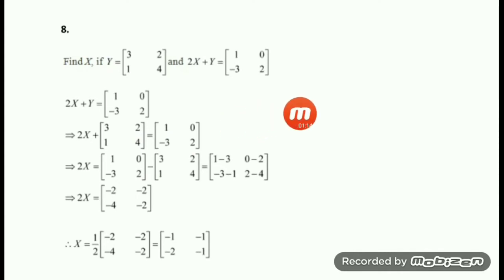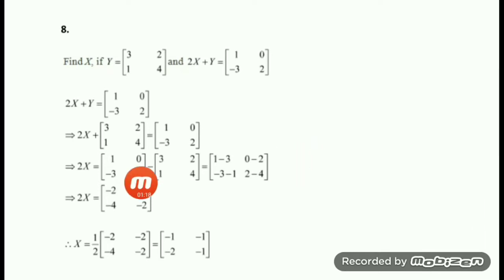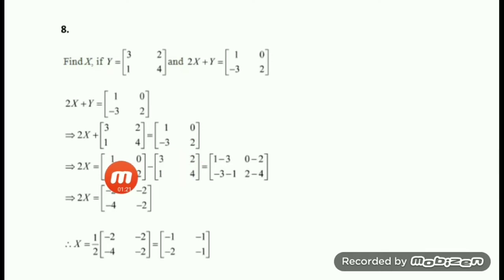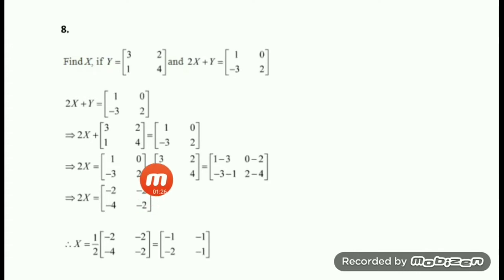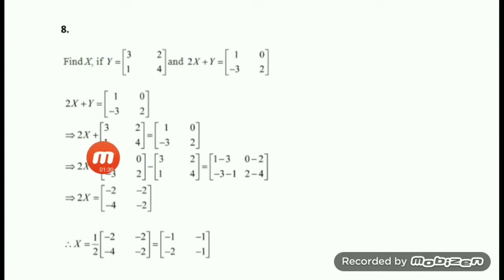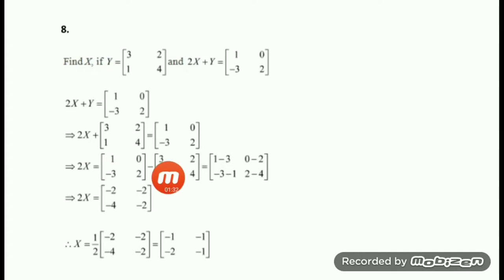After that, your aim is to get the value of X. So keep the term with 2X on the left side and bring the other matrix to the right side. That gives you [1, 0; -3, 2] minus this matrix on the right side. Since it was positive on the left, it becomes negative: minus [3, 2; 1, 4].